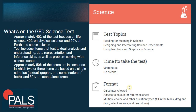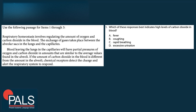Question 1 uses the following passage for items 1, 2, and 3 — already a scenario. Respiratory homeostasis involves regulating the amount of oxygen and carbon dioxide in the blood. Gas exchange takes place between the alveolar sacs in the lungs and the capillaries. Blood leaving the lungs will have partial pressures of oxygen and carbon dioxide similar to average alveolar values. If carbon dioxide levels differ, chemical receptors detect the change and alert the respiratory system to respond.